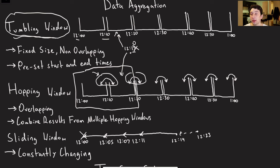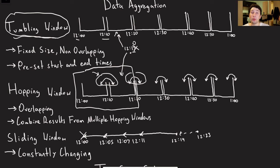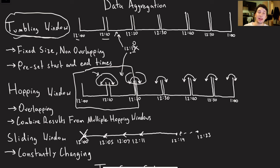The last type is the sliding window. To implement it, you basically just use a linked list where as events come in you put them at the end. Let's say we have a 20-minute sliding window and a new event comes in at 12:23. Now we have to remove any events at the front of the linked list that are too old — 12:00 is outside our sliding window, so we get rid of it. There's no set start and end time; as time goes on we just take the last 20 minutes.